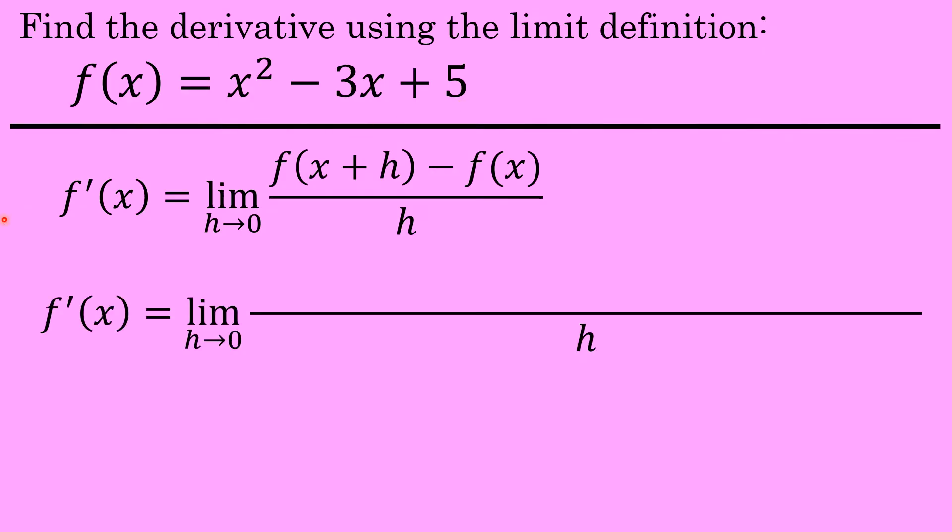So the limit definition is a quotient. In the denominator is a single factor of h, and the numerator includes two terms, f of x plus h and f of x. The first term in the numerator, f of x plus h, will require us to substitute for every occurrence of x in our function, x plus h.